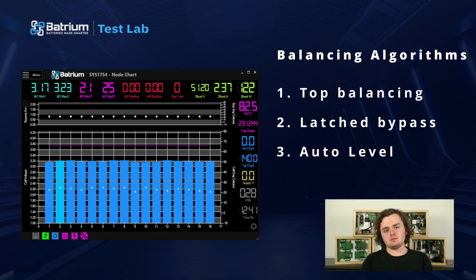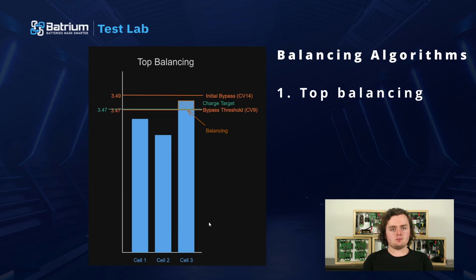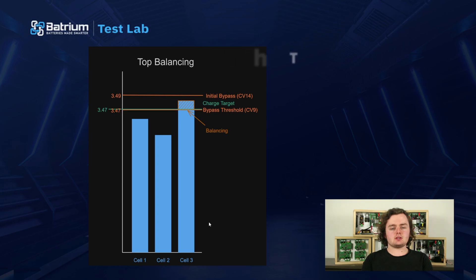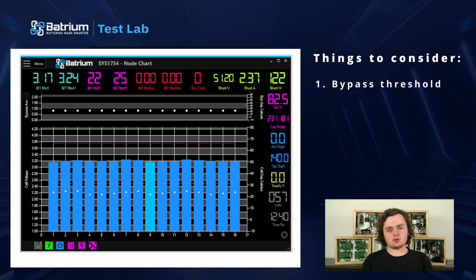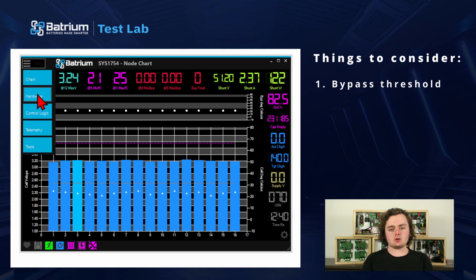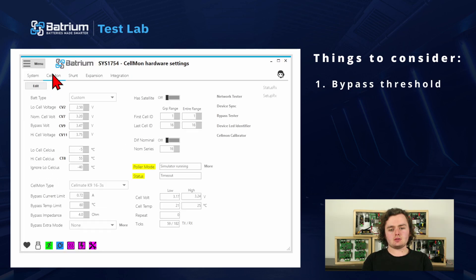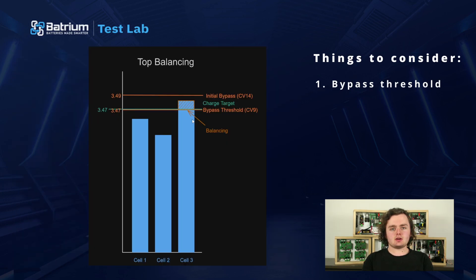To start, the basic algorithm that the others build on is called top balancing — this refers to the way it operates at the top of charge. There are four variables to consider. The first is your bypass threshold, marked in the toolkit software as cb9. You can find it under hardware settings, and you can see it on the graph as well.